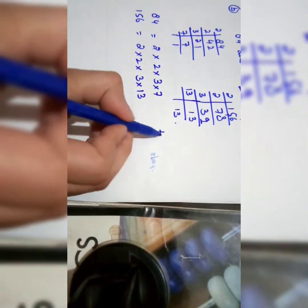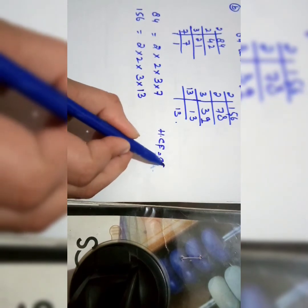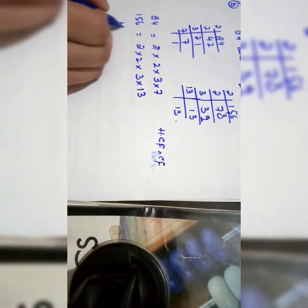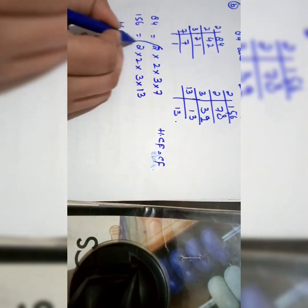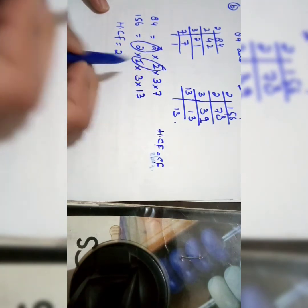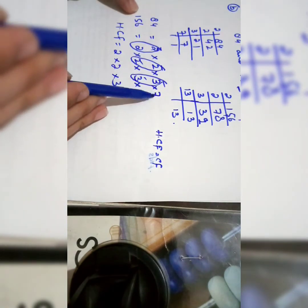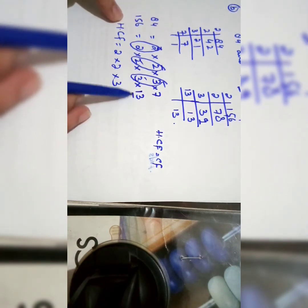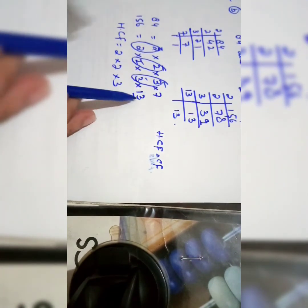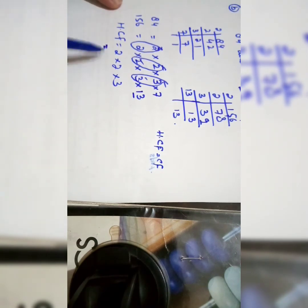Now take the common factors to find the HCF. The common factors are: first 2, then another 2 — these two 2s form one pair — then 3 is also common. We have 7 in the factors of 84 but no 7 in factors of 156, and 13 appears in 156 but not in 84, so these are left out as uncommon. Multiply the common factors: 2 times 2 is 4, and 4 times 3 is 12. So the HCF is 12.